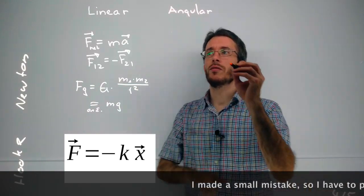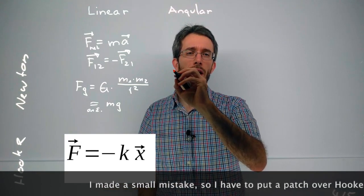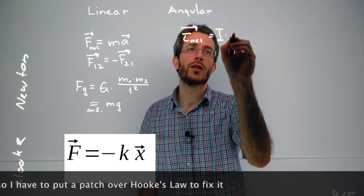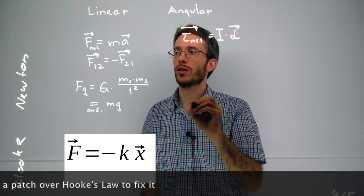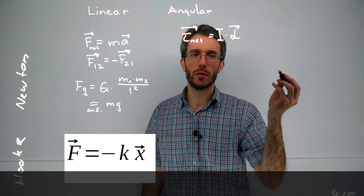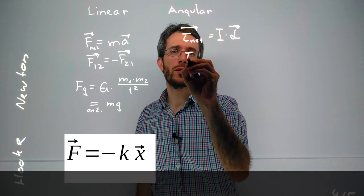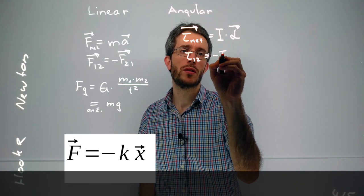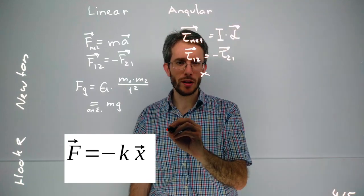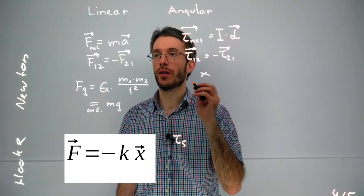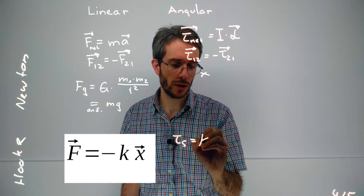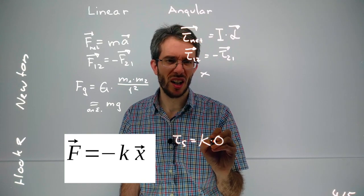Now, what are the angular equivalences? We have that torque net is equal to rotation inertia times angular acceleration. Again, if acceleration is, if angular acceleration is zero, that means the torque net must be zero as well, so we include Newton's first law of motion as well. We can do the torque one. Gravity doesn't have an equivalence. The spring of Mr. Hooke actually does. If you have a torsion spring, the torque created is proportional to the spring constant times the angle.